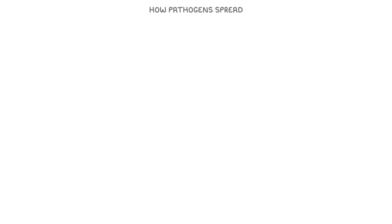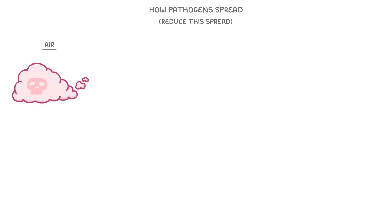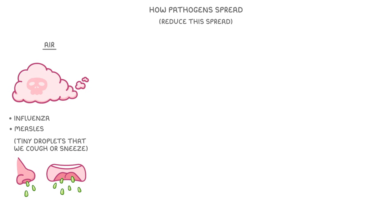For now though, we're going to focus on how these pathogens spread from person to person, and what measures we can take to reduce this spread. One way they spread is through the air. For example, many airborne pathogens, like the influenza virus or measles virus, can be carried in tiny droplets that we expel when we cough or sneeze.